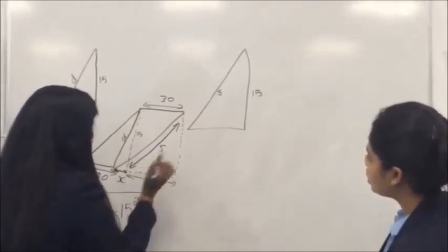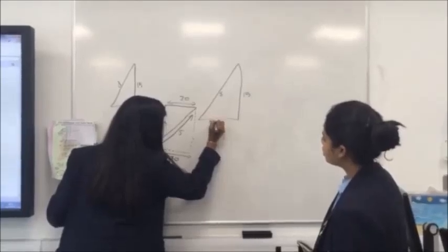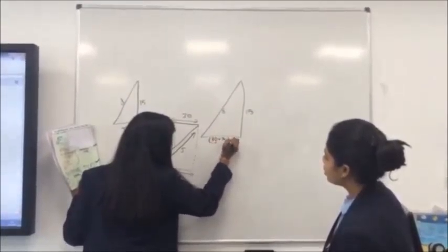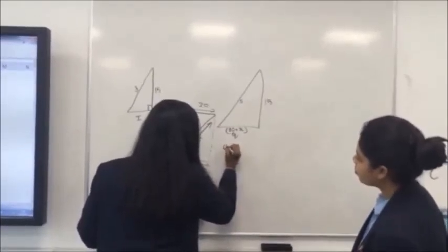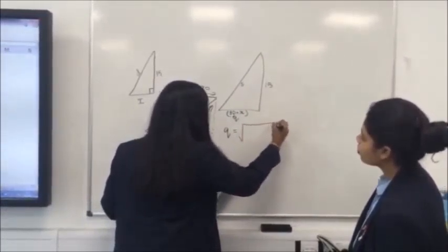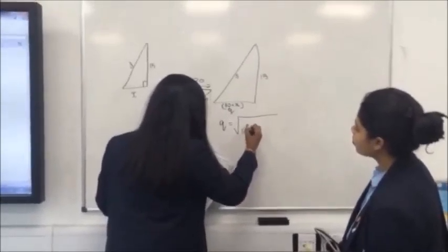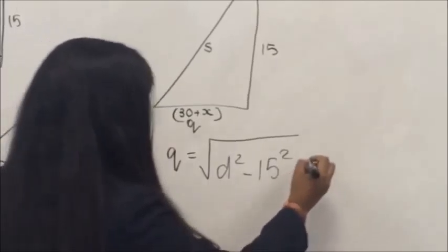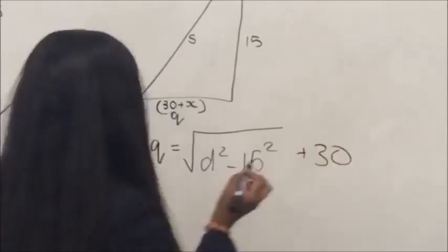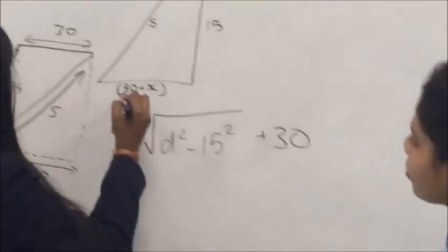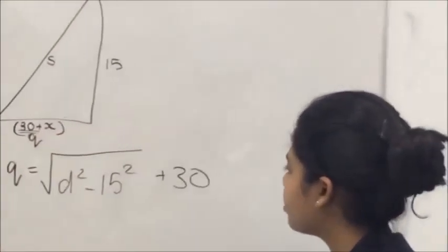And that will be S, perpendicular height of 15, from the parallelogram, and then that would be 30 add X. Q, we're going to call 30 add X, Q. Q actually equals square root of D squared, minus 15 squared, add 30, because it's the same as this, but this time we're actually adding the 30 as well.